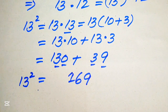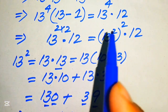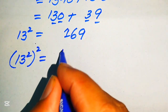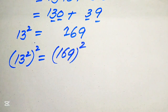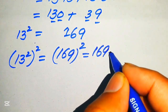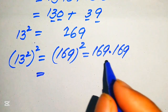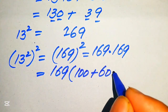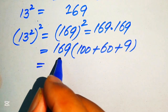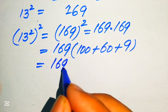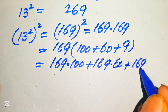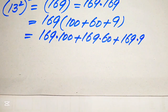Now we have 13 squared and its whole square, so we take the square of 169. The meaning of 169 squared is that we multiply 169 by 169. We break 169 as 100 plus 60 plus 9, then multiply 169 on each of these values: 169 multiplied by 100, plus 169 multiplied by 60, plus 169 multiplied by 9.